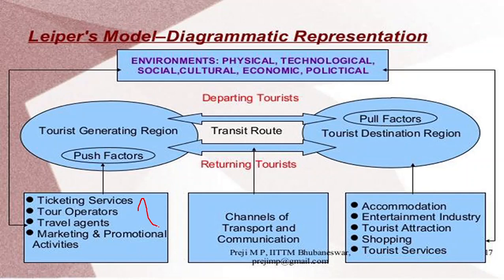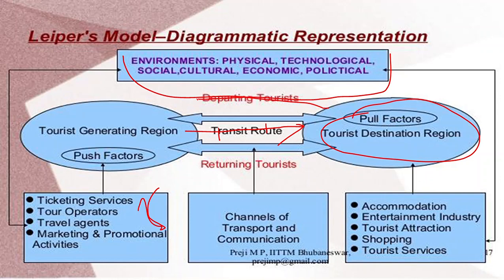In the diagrammatic representation of Leiper's model, TGR shows push factors pushing a person to take a tour; through the Transit Route Region — with airports, railway stations, and roads — they reach the destination; and pull factors at the destination attract people to visit. PESTEL factors outside the open system also affect the whole tourism system. This is Leiper's Tourism System — a very popular and important model for tourism.